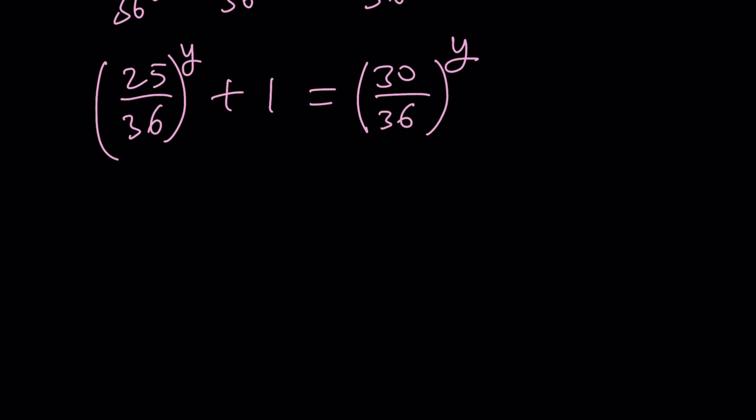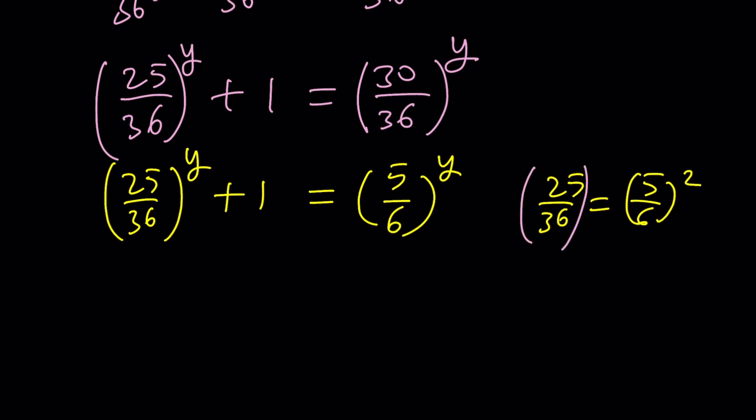This is 25 over 36. By the way, 30 over 36 can be simplified. Divide by 6, you get 5 over 6 to the power y. This makes the equation really special because 25 over 36 is 5 over 6 squared.